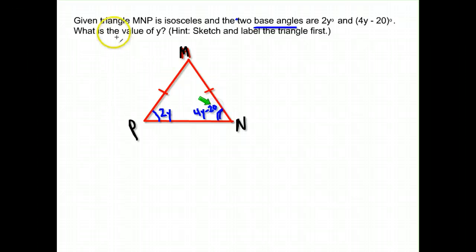What is the value of y? Well, what do we know about the base angles of an isosceles triangle? The base angles are the two congruent angles, so the equation we can set up is that these two are equal. We can say 2y equals 4y minus 20.